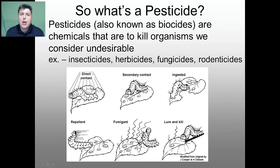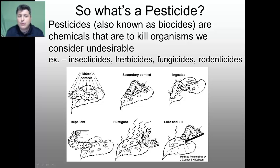When nature does not completely eliminate the pests as we would like, we can apply chemicals known as pesticides. Pesticides, also known as biocides, are chemicals that are designed to kill organisms that we consider to be undesirable — for example, insecticides to kill insects, herbicides to kill weeds, fungicides and rodenticides.